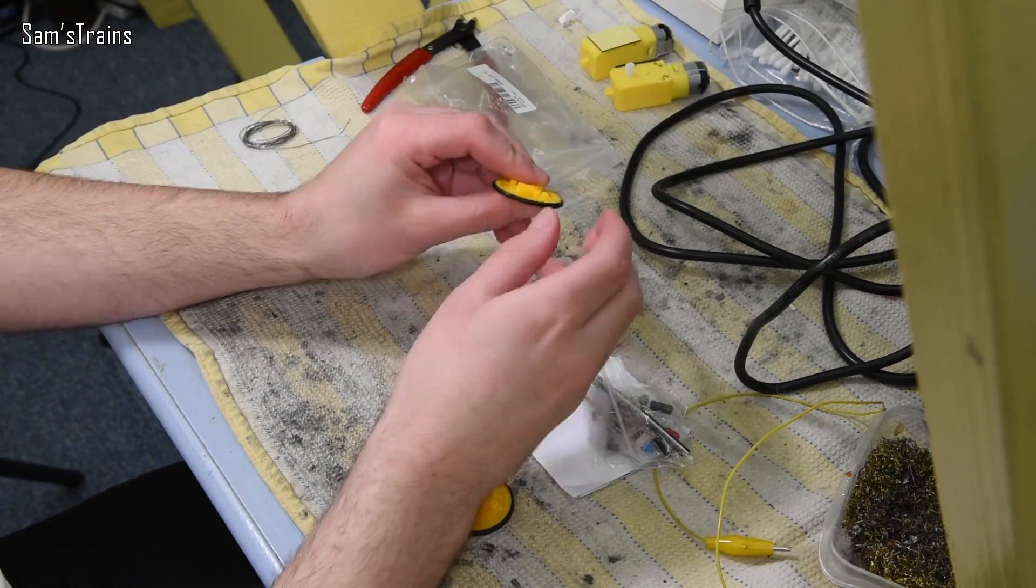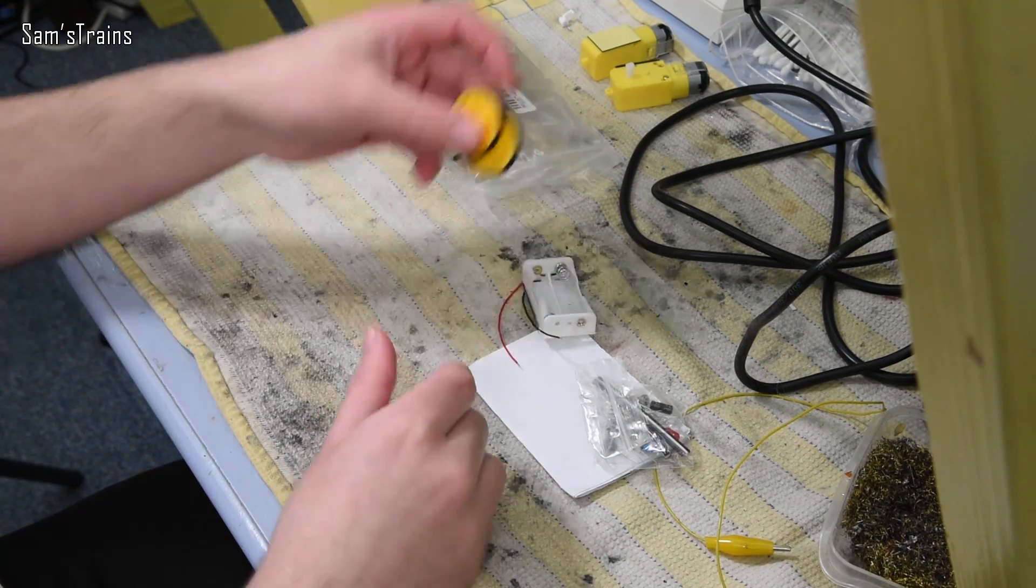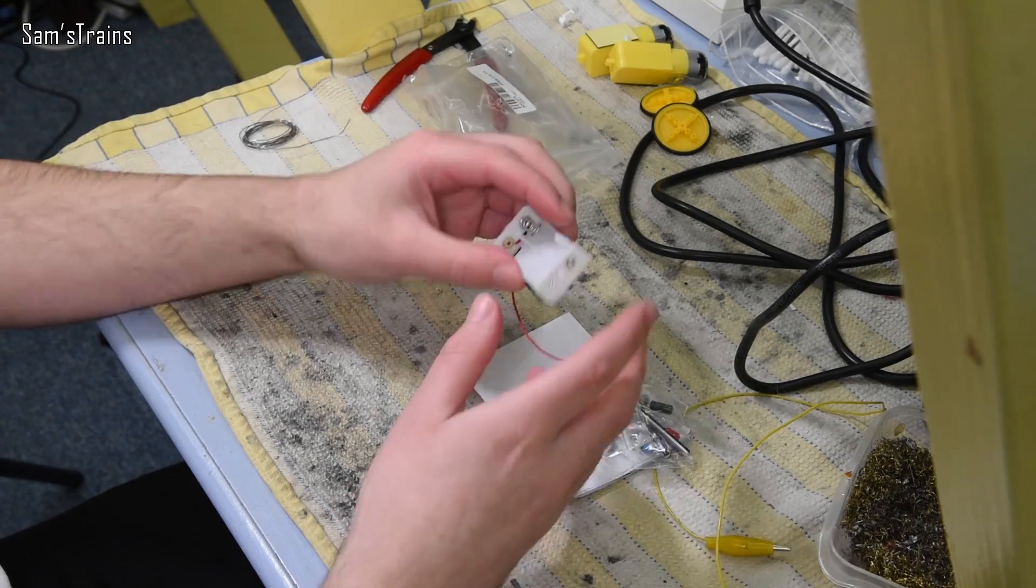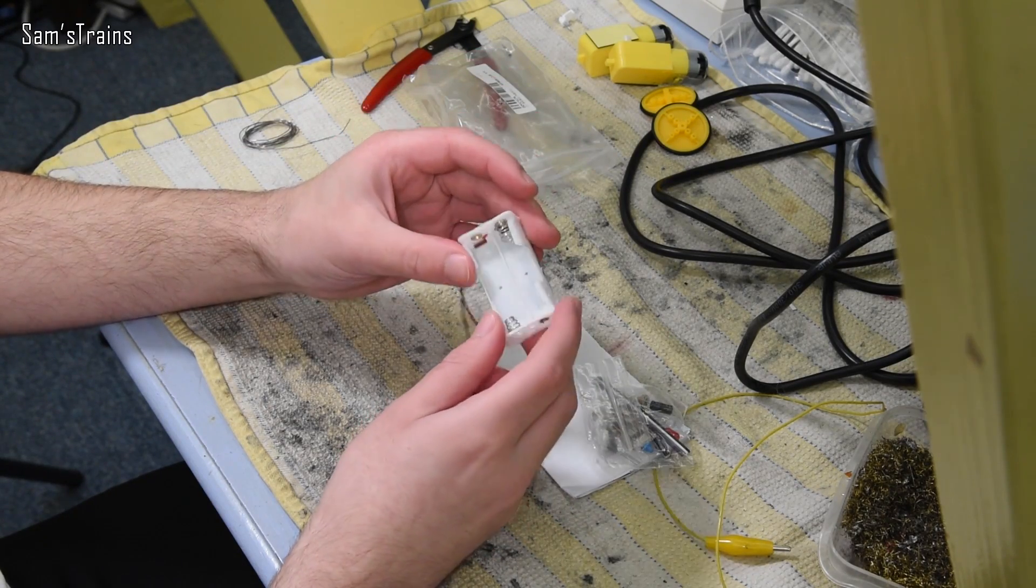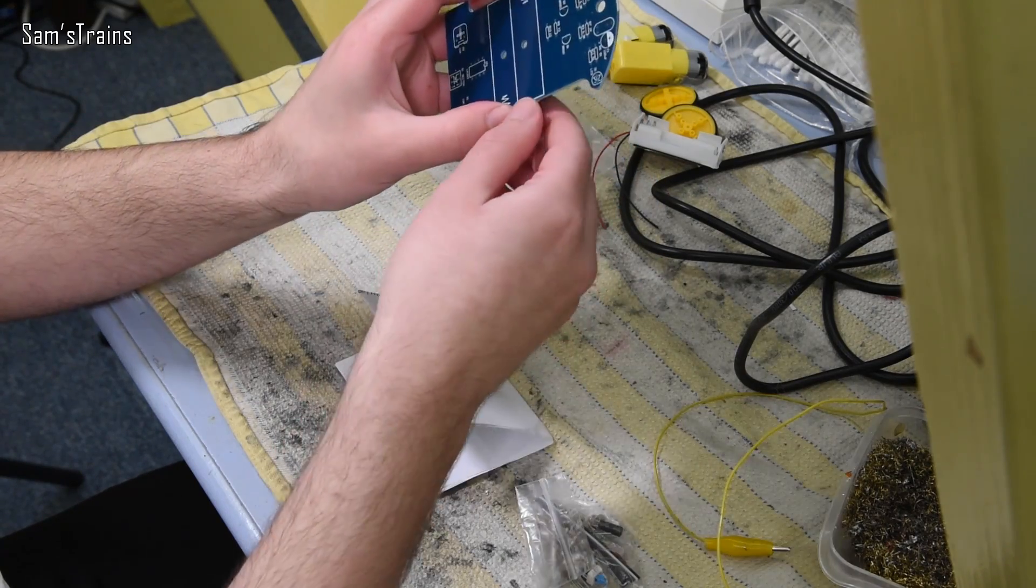We've got the wheels here which have got the rubber tires already put onto them, which is quite nice, so that looks all ready to go. We have the battery compartment here, which quite obviously a couple of double A batteries will fit into.